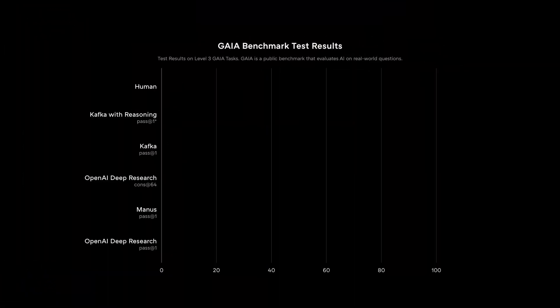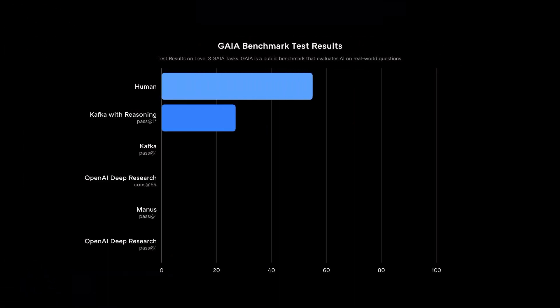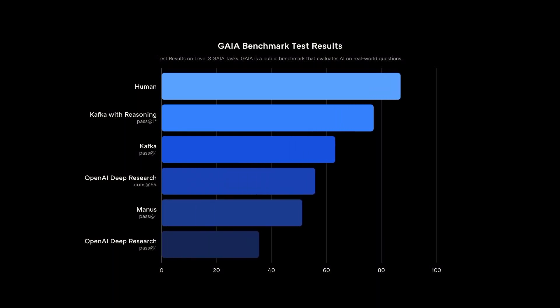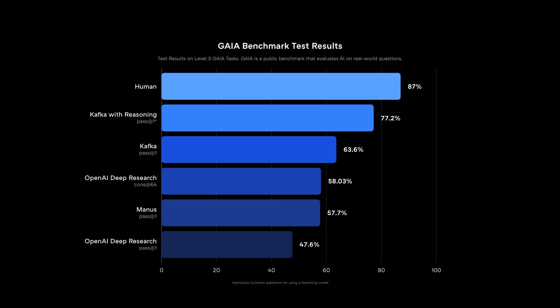On level three of the GAIA benchmark, Kafka has achieved state-of-the-art performance in both non-reasoning and reasoning settings, closing the gap with human performance. While the existing benchmarks don't test the full breadth of Kafka's capabilities, they nonetheless show that Kafka is able to complete economically viable knowledge tasks at a fraction of the cost than was previously possible.